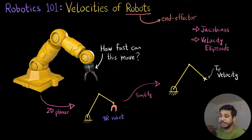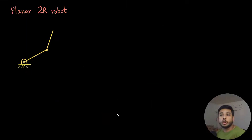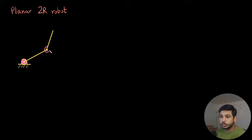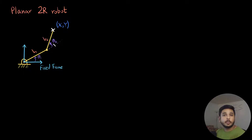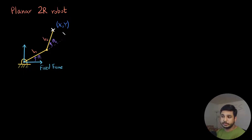Let me draw this robot again. Drawing this planar 2R robot again, I know that it has got 2 revolute joints — one here and the other one here — so it has got motors at these 2 joints. Marking out the fixed frame: theta1 and theta2 are my joint angles, and A1 and A2 are my link lengths. This cross represents the tip location of this robot, with x and y being the tip coordinates.